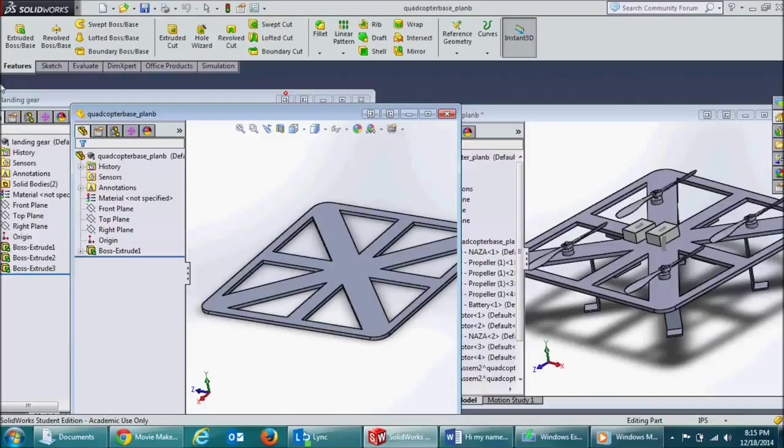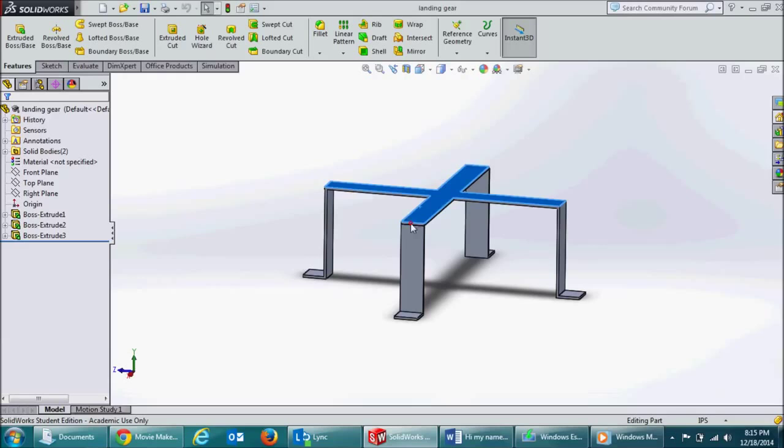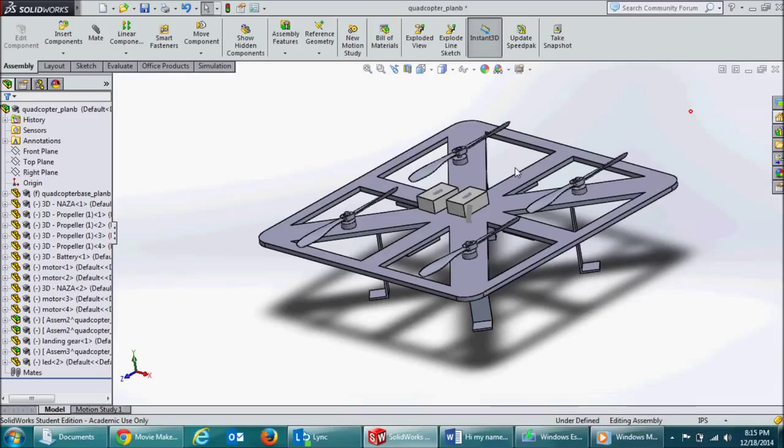For our landing gear, we used polycarbonate plastic and bent it at the edges using a heat gun. We put it all together for our final design using zip ties.